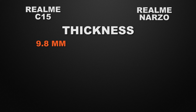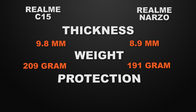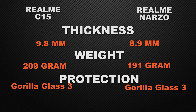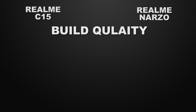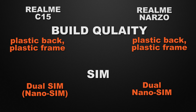For body thickness, the C15 is 9.8mm and the Narzo is 8.9mm — Narzo wins with a slimmer body. For weight, the C15 is 209 grams and Narzo is 191 grams — Narzo wins with a lighter body. Both devices come with Gorilla Glass 3 protection, so it's a tie. Both have a plastic back with plastic frame, and both support dual nano SIM — all ties.